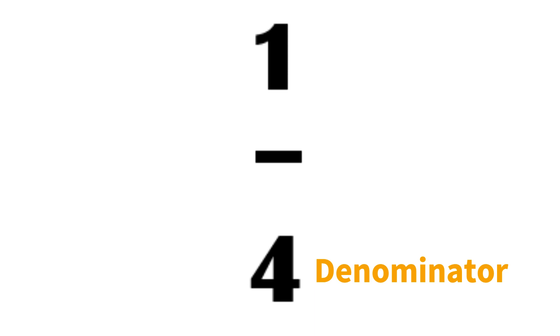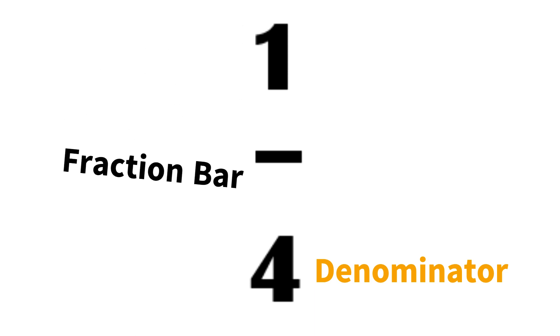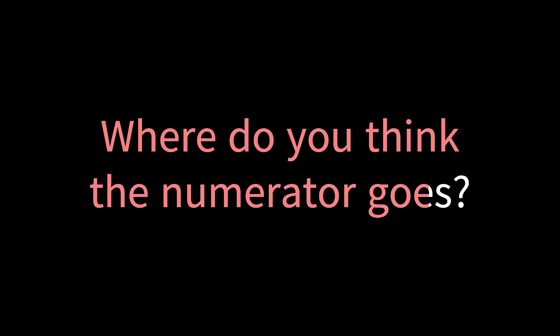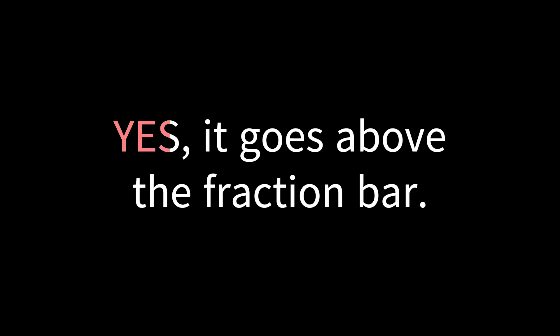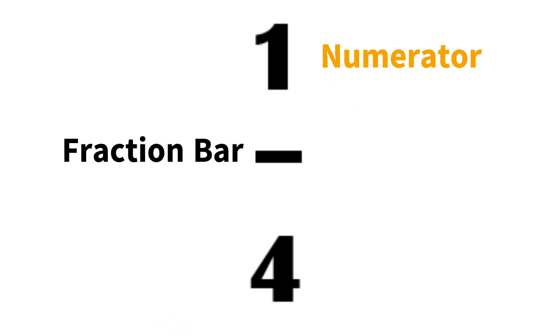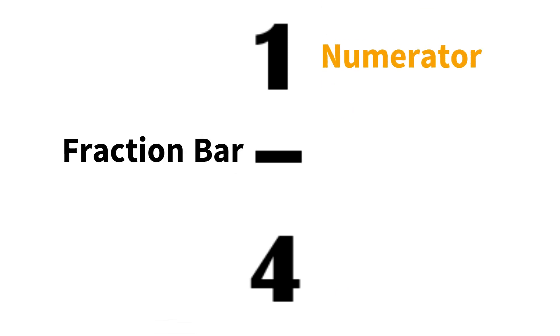So here we have a fraction — that's how we write a fraction. You see the bottom number says four? That's how many parts, and that's called the denominator. And do you see that black line in the middle of those two numbers? That black line is called the fraction bar. Now, where do you think the numerator goes? If the denominator goes to the bottom, the numerator will go to the top — yes, it will go to the top. So the denominator goes to the bottom, the numerator goes to the top.